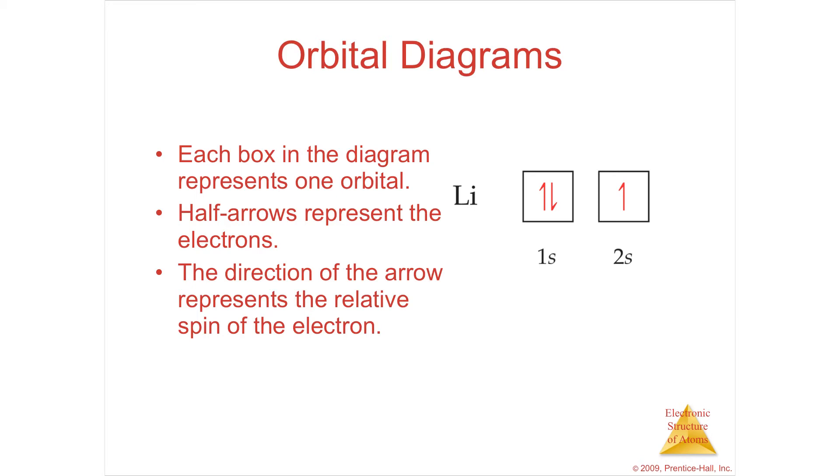Section 6.8, electron configurations. An electron configuration is where an electron is likely to be. It's a probability place.